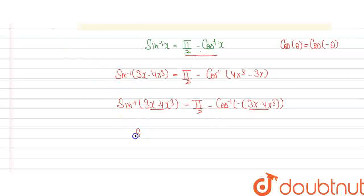So we will get sin⁻¹(3x - 4x³) is equal to sin⁻¹(3x - 4x³).